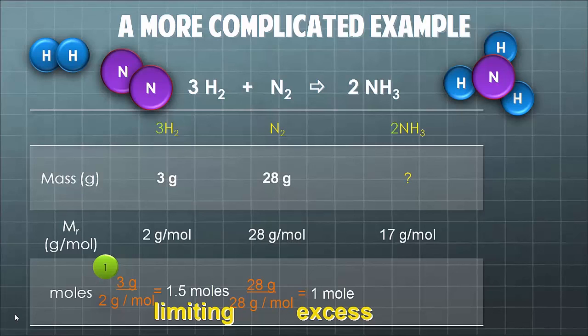Now the hydrogen is going to be limiting because if you think about it, if we've got 1.5 moles of hydrogen, the maximum number of moles of nitrogen we can use is 1.5 divided by 3, half a mole. But actually we've got a whole mole here so we've actually got twice as much nitrogen as we actually need.